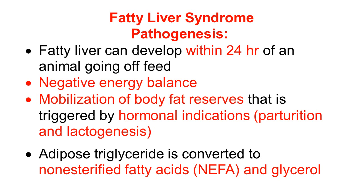We discuss now the pathogenesis of fatty liver syndrome. This fatty liver can develop very fast — within 24 hours of an animal going off feed. Within 24 hours the animal can develop fatty liver syndrome because of inappetence, anorexia, and negative energy balance. When there is negative energy balance, there is mobilization of body fat reserves, because animals are already fatty. This mobilization of fat reserves is triggered by hormonal cues — hormonal changes at parturition and at the initiation of lactation — causing mobilization of body fat reserves.